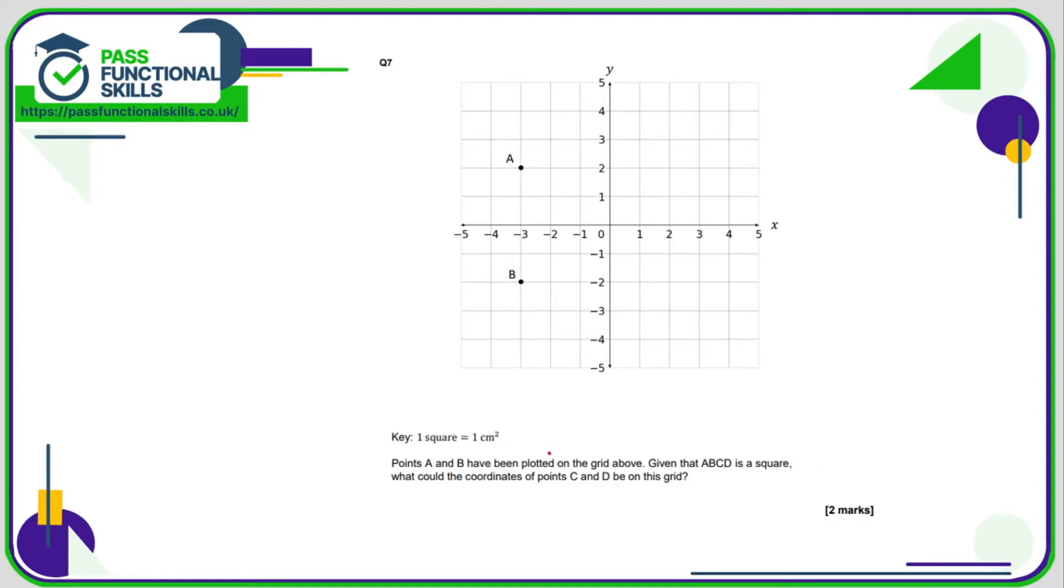Question number seven. Points A and B have been plotted and we're trying to make a square. So what is the side length? One, two, three, four. Obviously here we need a right angle, so the next point will be on this line here. Again, four squares away from A, so one, two, three, four. That is going to be C or D, it doesn't really matter. And therefore the other point is going to be one, two, three, four. And we've created a square. So the coordinates of these points are, probably call that C, that one D. Let's call C one, minus two. And this point here is one, two.